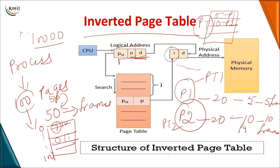The inverted page table contains data related to multiple processes, not a single process. All three techniques — hierarchical, hashed, and inverted — are used to store large amounts of page table data without disturbing the original page table structure. We will move on to the next topic of demand paging in the next class.